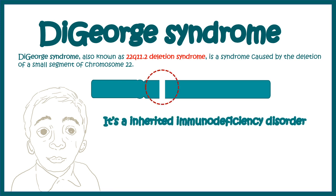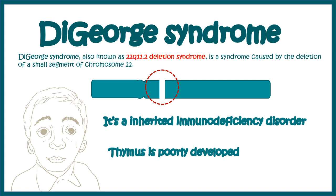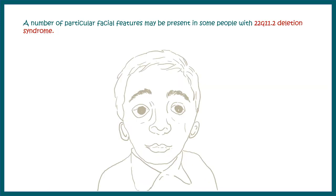DiGeorge syndrome is an inherited immunodeficiency disorder. The major features of this disease are a poorly developed thymus or no thymus at all, which leads to defects in T cell production, making these individuals immunocompromised. They also undergo cardiac complications.